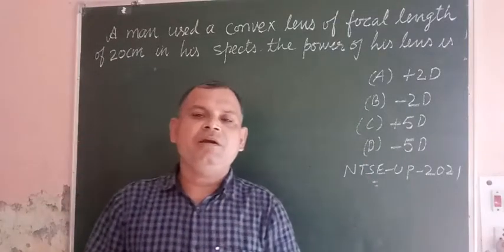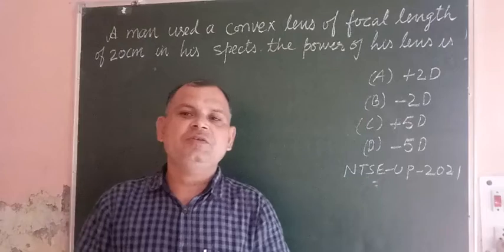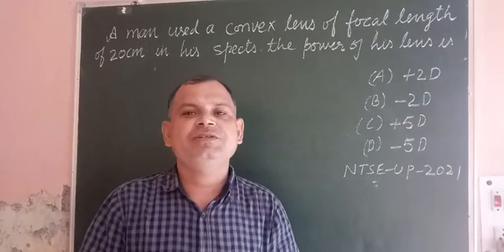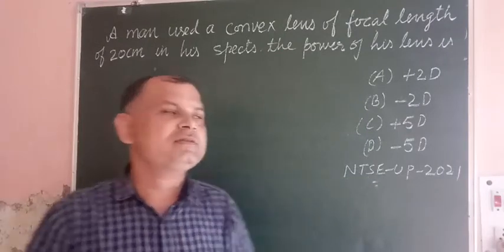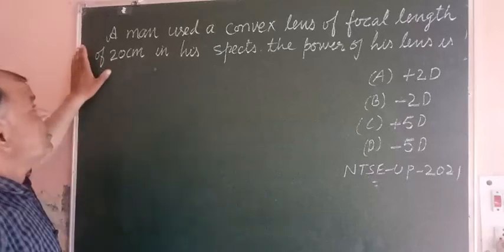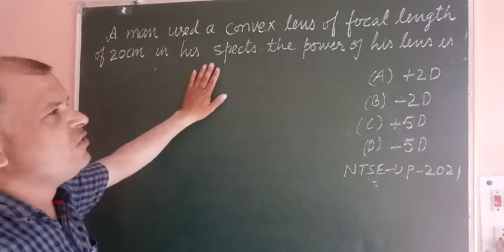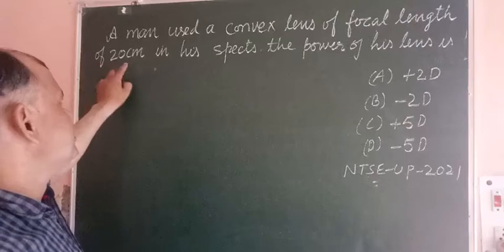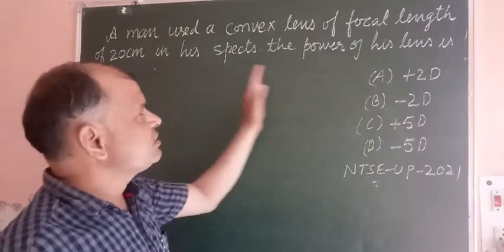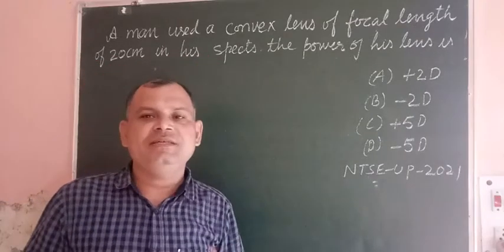Hello friends, welcome to NTSE-UP physics solution series. This is a question from power of lens. The question is saying that a man used a convex lens of focal length 20 cm in his specs. The power of his lens is?